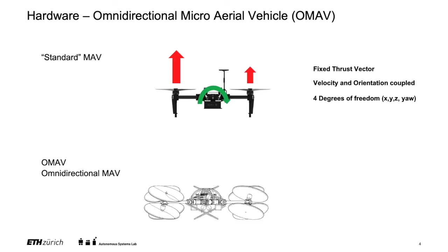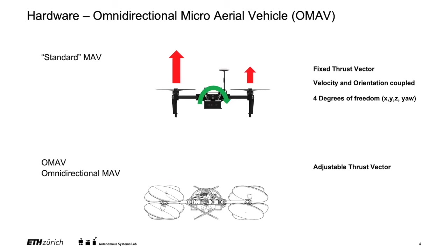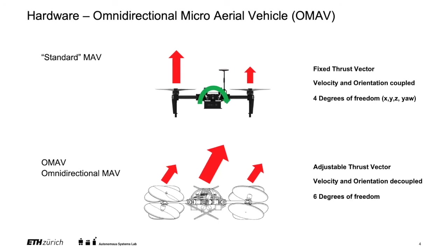In contrast, omnidirectional MAVs can create thrust in many different directions. This is necessary when you want to go towards a structure and apply force or torque to it. In that sense, velocity and orientation are decoupled, and we can create forces and torques in six degrees of freedom.